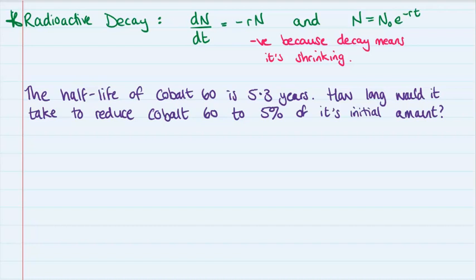The next of these common uses is for radioactive decay. So we have a proportional rate here, n is being used as the amount. So the rate at which the amount is changing over time is negative r to the n. Now it's negative because decay means that that value is shrinking. So if we turn that into the equivalent e equation, we get that n is equal to the initial value of n e to the minus rt. And here is our example question.